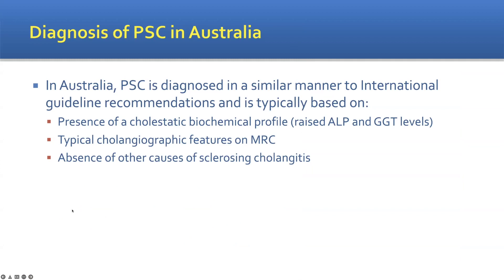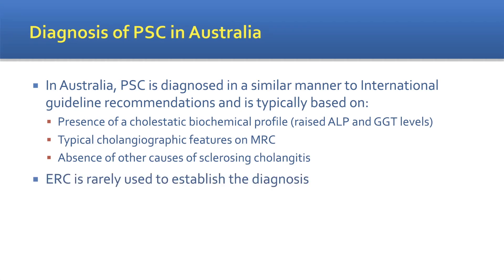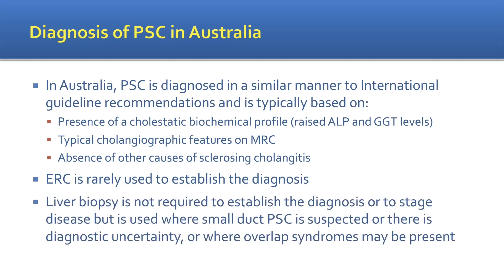In Australia, PSC is diagnosed in a similar manner to international guidelines, based on liver function test elevations of serum alkaline phosphatase (ALP), gamma-GT, and typical features on MRC cholangiography in the absence of other causes such as surgical intervention or hepatic artery thrombosis. ERC is rarely used to establish diagnosis, and liver biopsy is not typically required, but is used where small duct PSC is suspected with inflammatory bowel disease, or where overlap syndromes such as autoimmune hepatitis may be present.